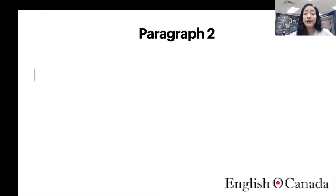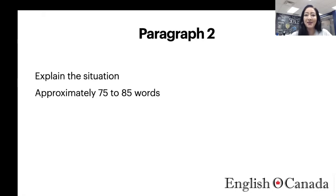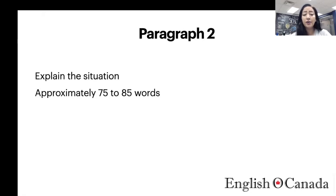Paragraph two is the most important paragraph. It's the main body of the letter and contains all the information you need to give to the examiner to show that you actually know how to write a letter. In this paragraph you're explaining the situation — try to keep it to about 75 to 85 words.